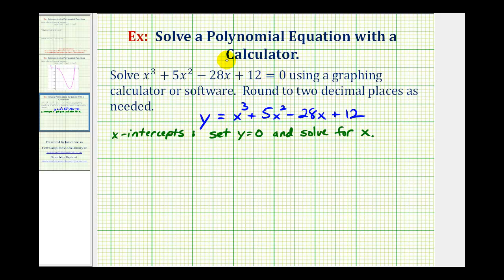So by determining the x-intercepts of this function, we're actually finding the values of x that make this equation equal to zero.